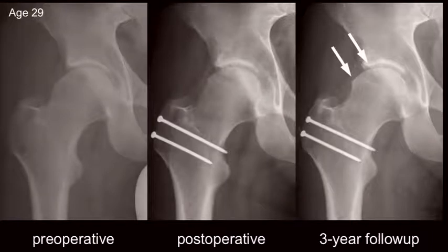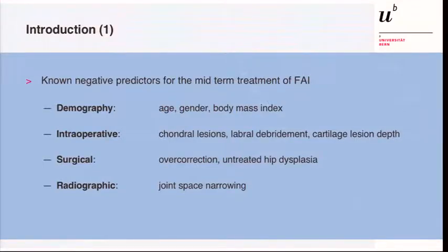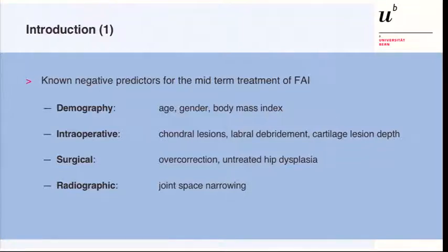Clinically the patient was not doing well at that time, and the question is: could we have foreseen or predicted this unfavorable outcome? We know some negative predictors for the midterm treatment of impingement — demographic parameters like age, gender, and BMI; intraoperative negative predictors like cartilage lesions, labral debridement, and depth of cartilage lesion; and surgical factors such as overcorrection or untreated hip dysplasia combined with a cam deformity.